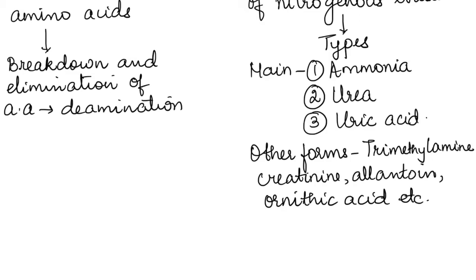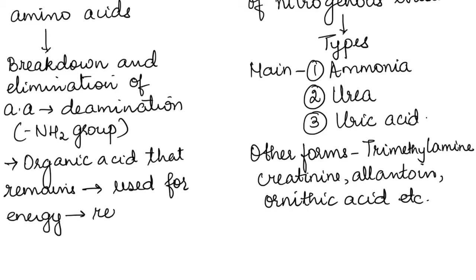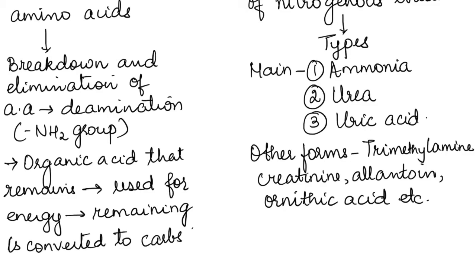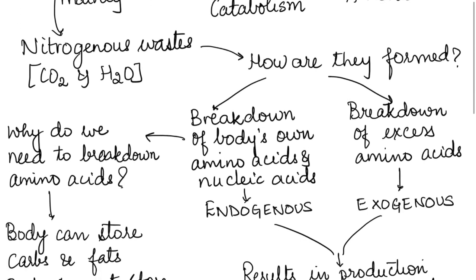This process is called deamination, which removes the NH2 group from the amino acids. That results in an organic acid that remains after the removal of the NH2 group. This organic acid is used for energy production, and the remaining portion is converted to either carbohydrate or fat and is stored. This is the way by which the nitrogenous wastes are formed in our body.